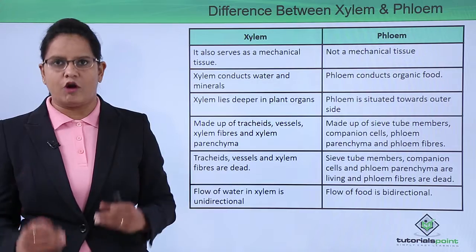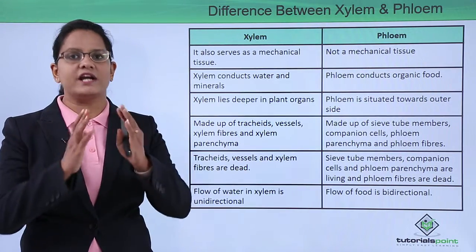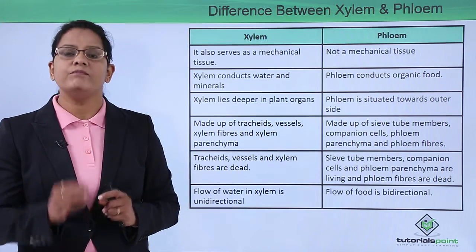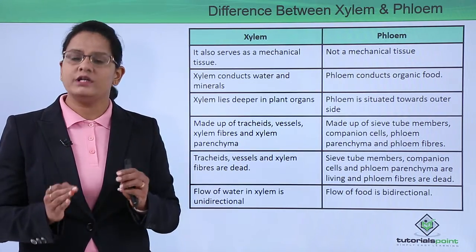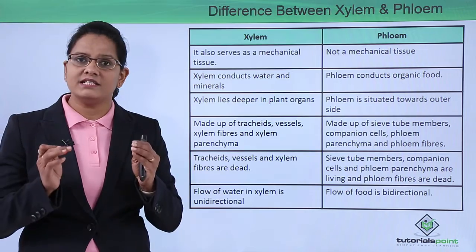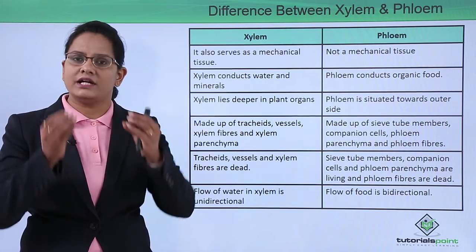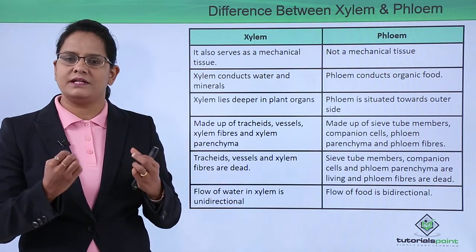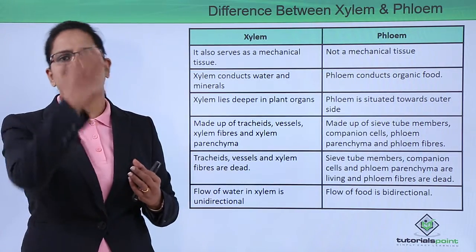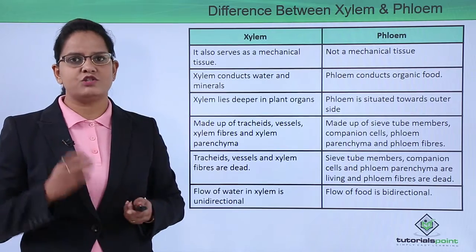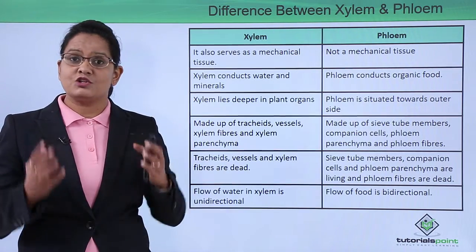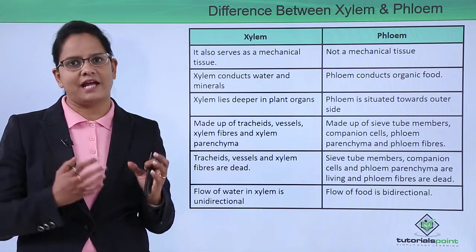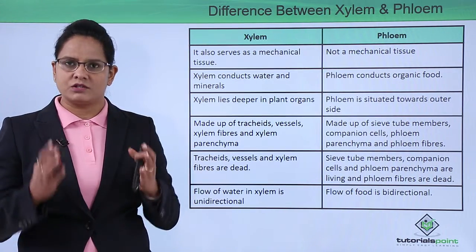The flow of water in xylem is unidirectional — from the roots to the tip of the leaf, in one direction. But in the case of phloem, the transport of food is bidirectional. Since leaves are present at both the bottom and the top of the plant, and food synthesis happens at the leaves, transport of food can occur in both directions — from bottom to top and top to bottom.